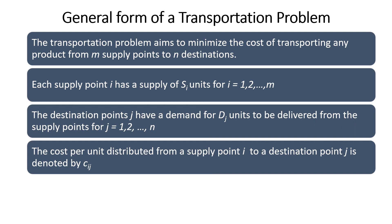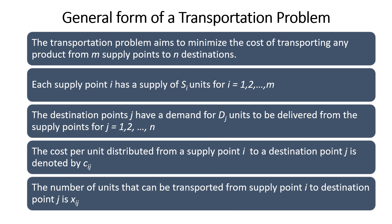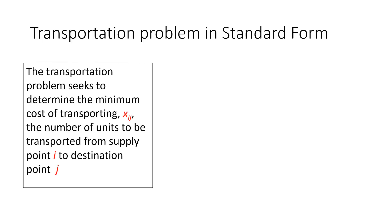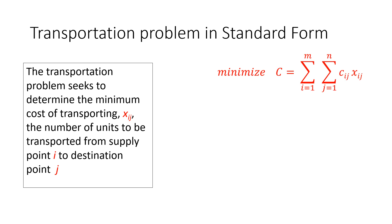The cost per unit of shipping one unit from source i to destination j is Cij. Similarly, the number of units that can be shipped on the route from i to j is denoted as Xij. The standard form of the transportation problem seeks to find the minimum cost of transporting Xij units from supply point i to destination j — that is the question we want to answer. The total cost to minimize can be represented as a double sum over i and j of Cij times Xij.